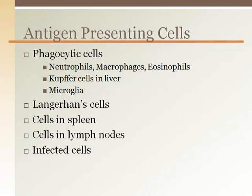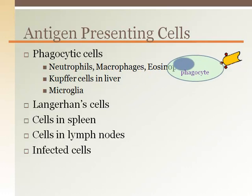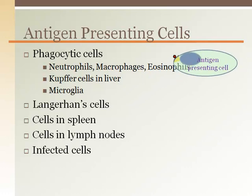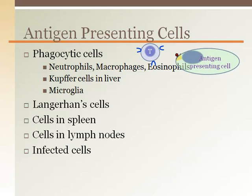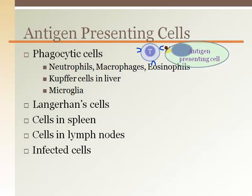Recall from the innate immunity or nonspecific defense that phagocytic cells are also antigen-presenting cells. This is an important activation process for the acquired immunity or specific defense. The presenting of an antigen to T cells will allow them to respond in larger numbers to destroy that specific antigen. In addition to the phagocytes, there are a number of other cells throughout the body that act as antigen-presenting cells.